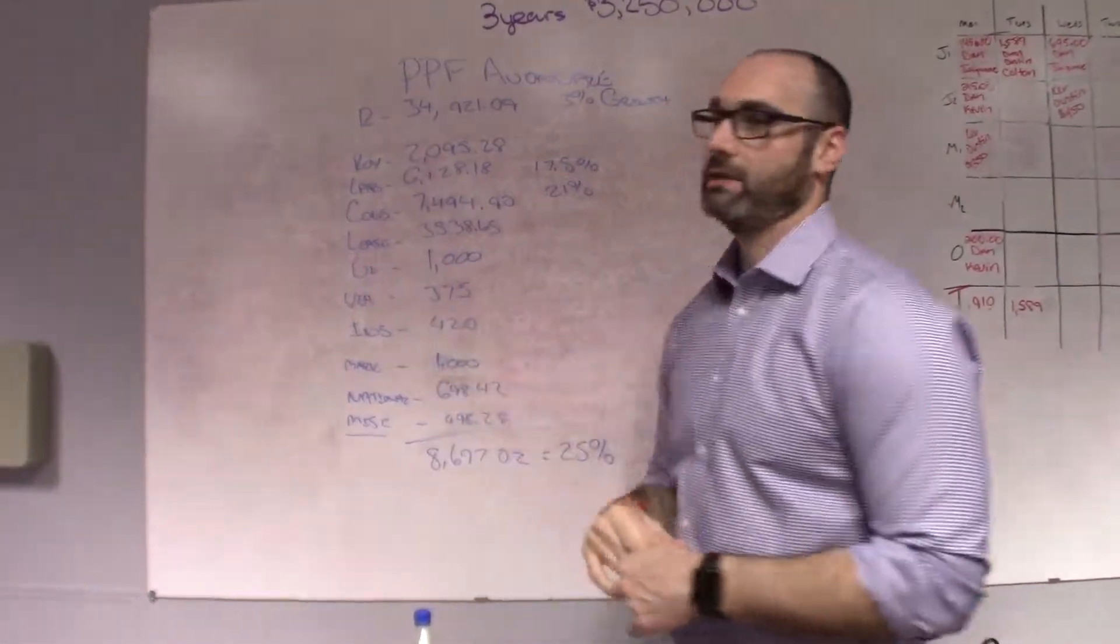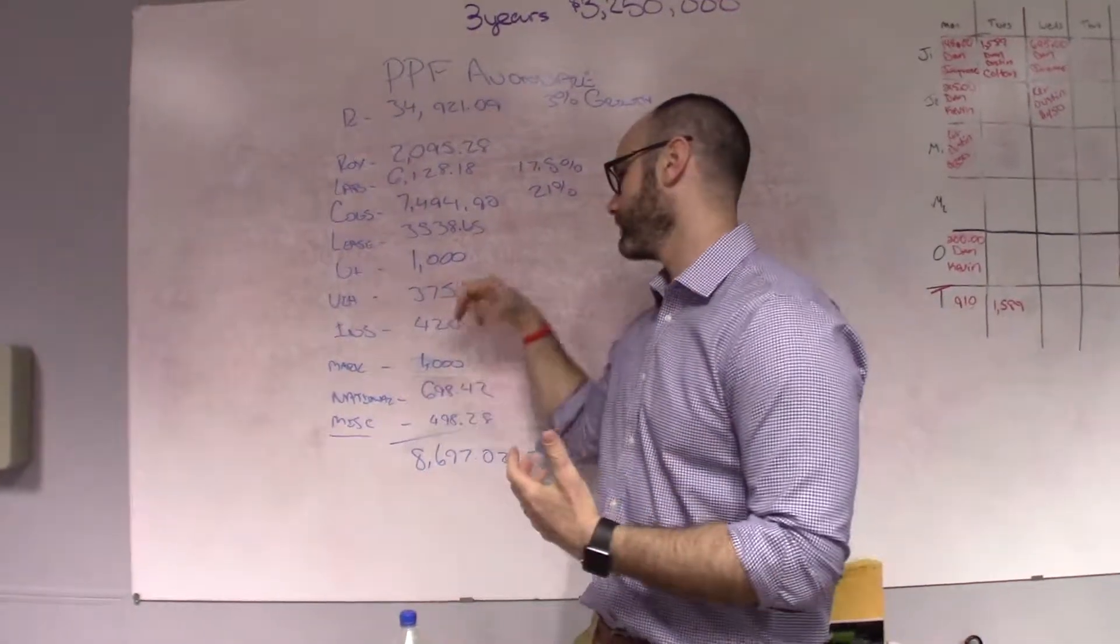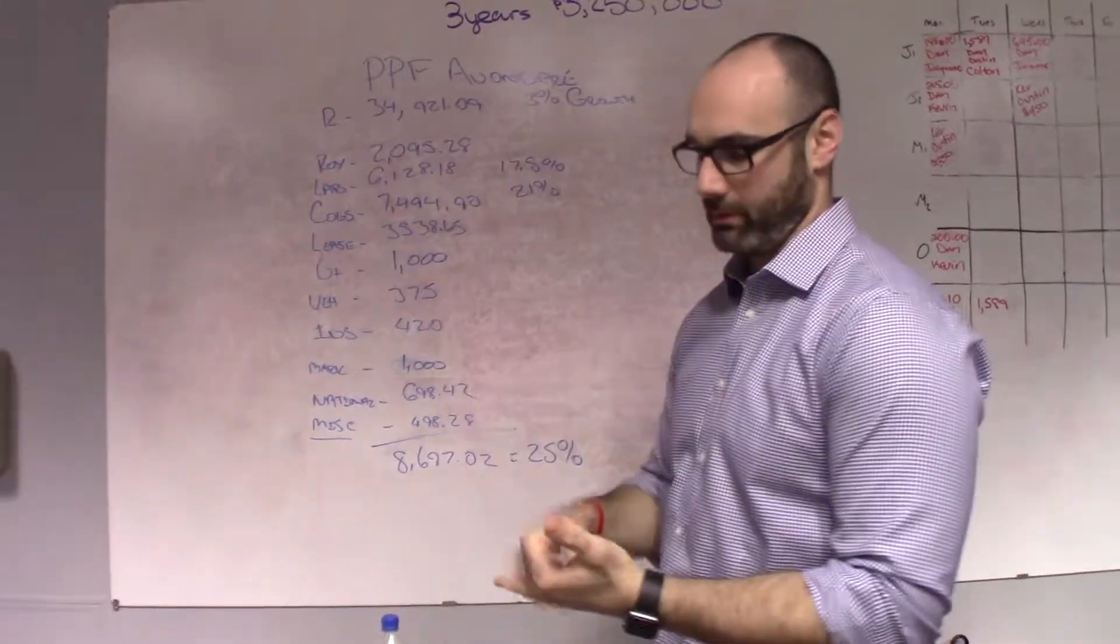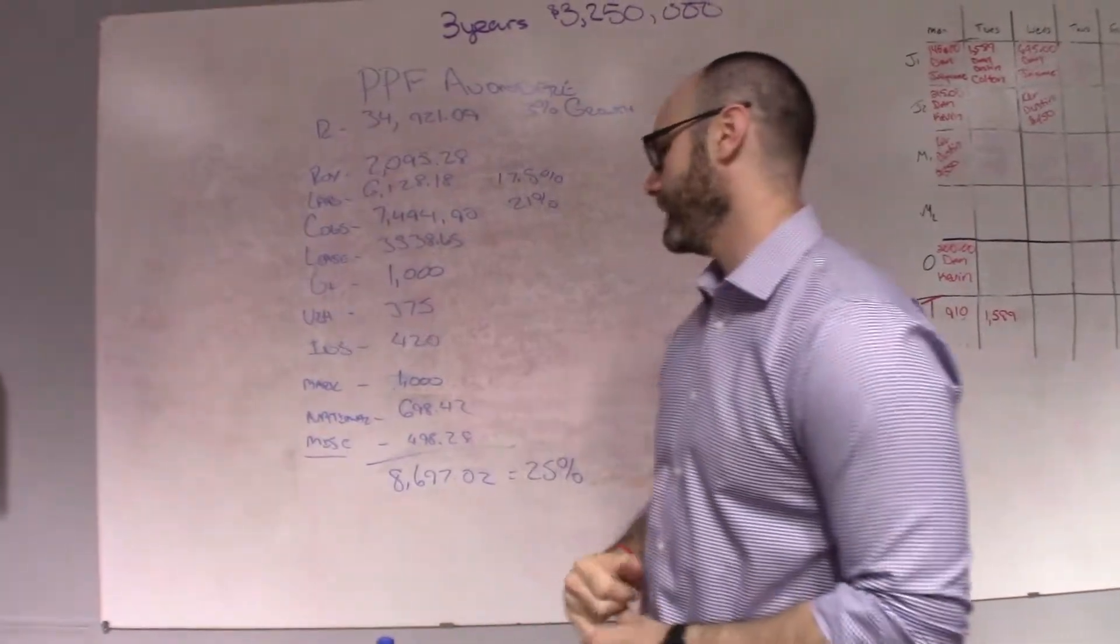Vehicle cost. So, we have a delivery vehicle that we use and it's $375 a month. Our insurance, which is our liabilities, our umbrella policies, $420 a month.